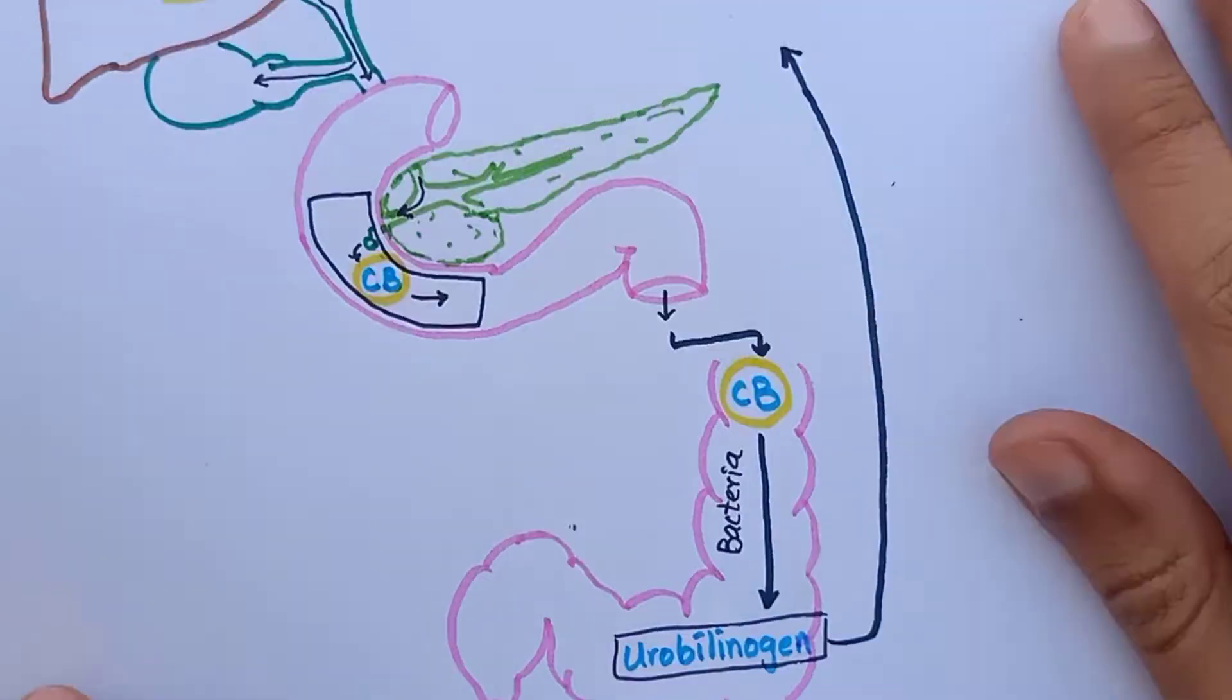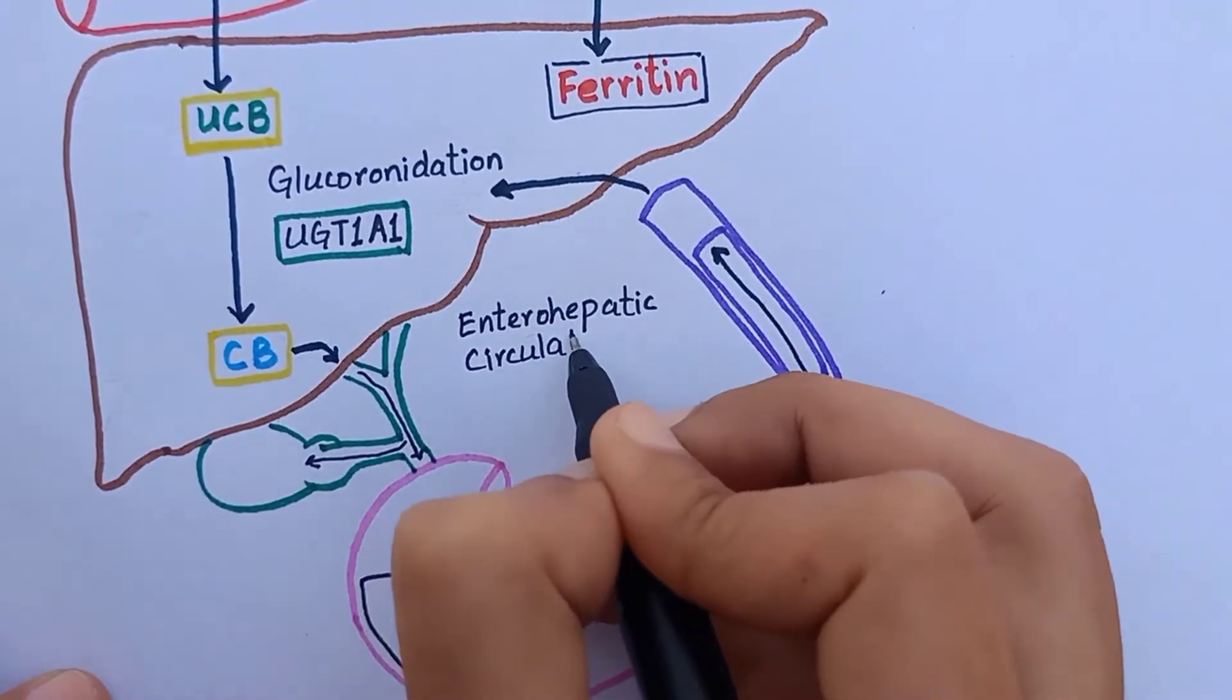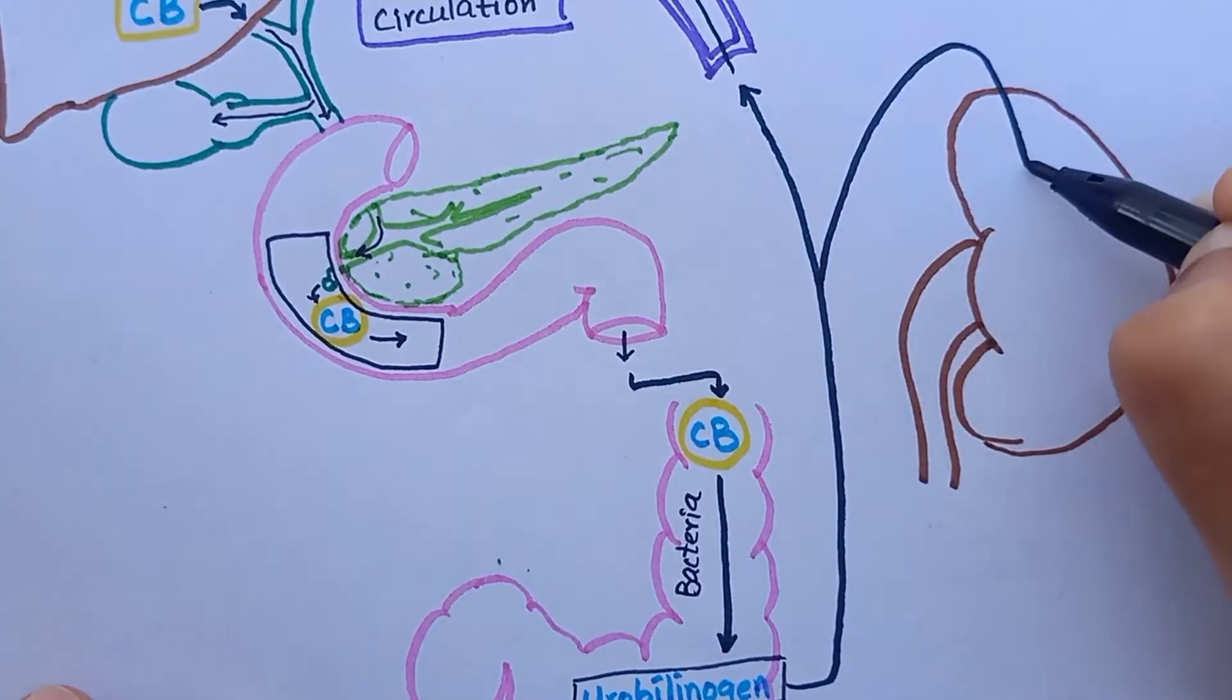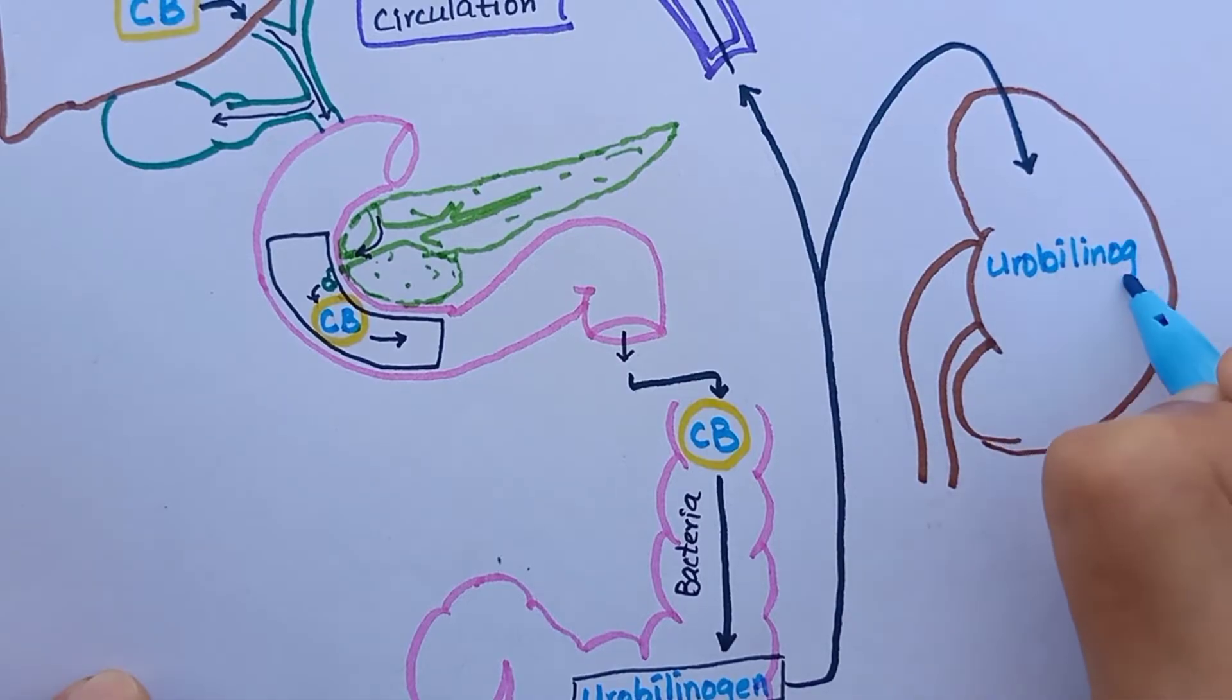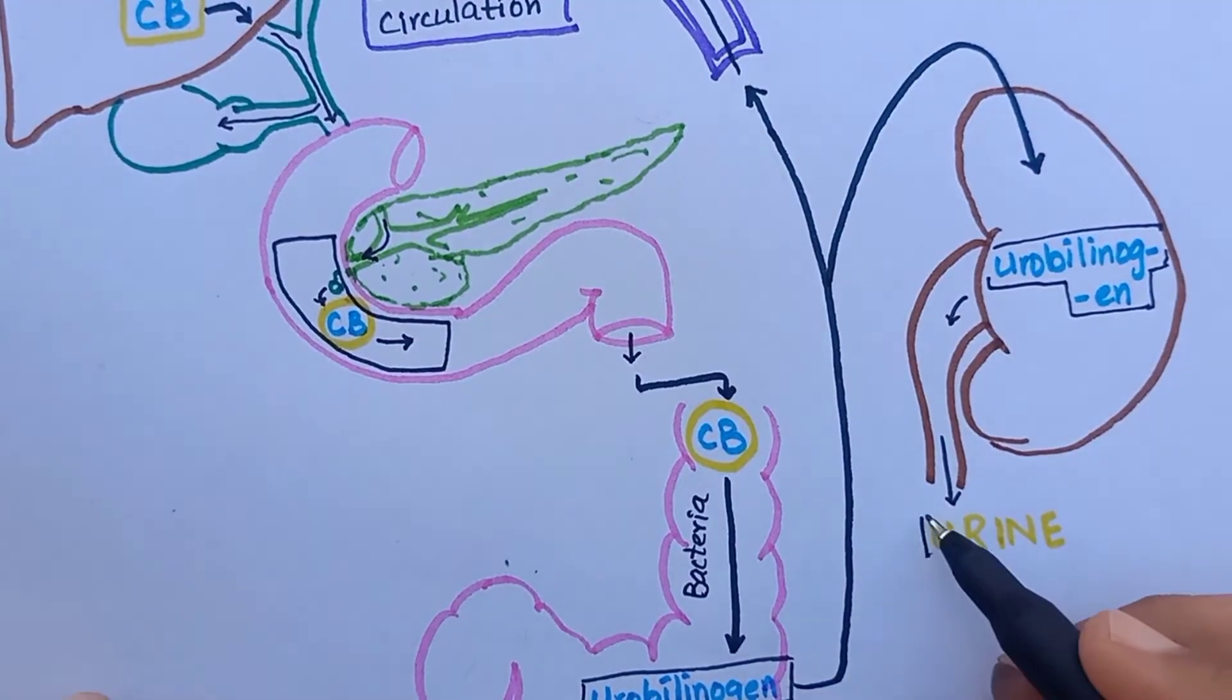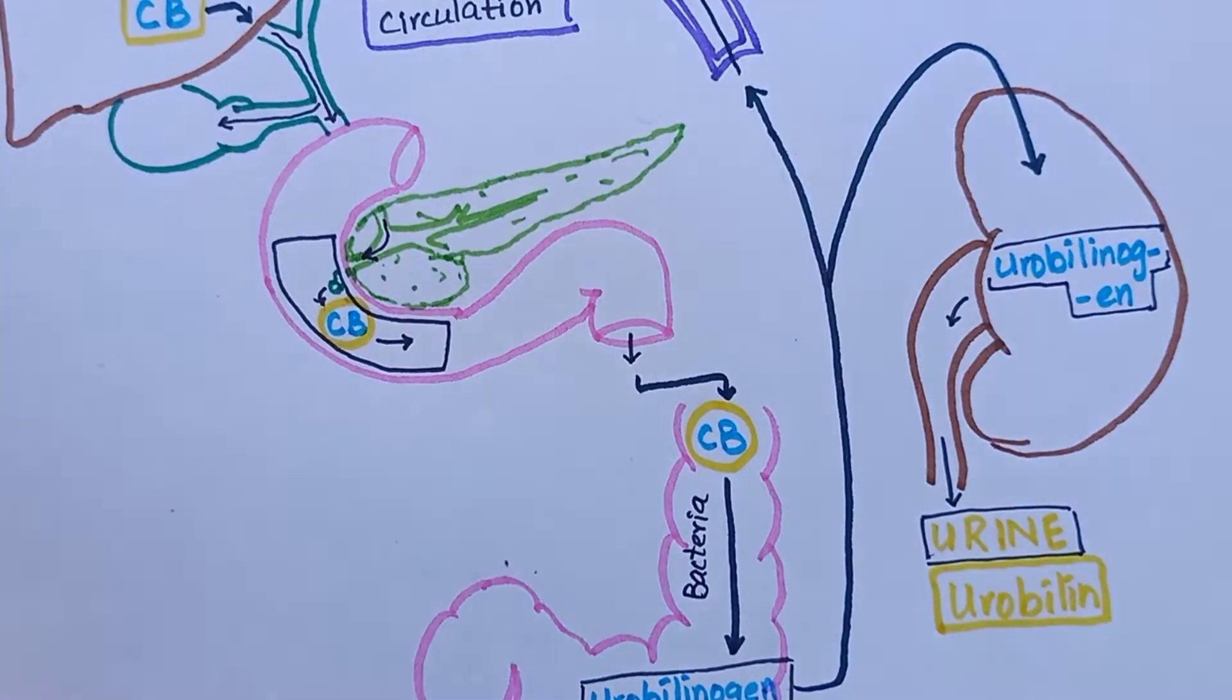Urobilinogen is partly reabsorbed and undergoes enterohepatic circulation and returns to liver to be processed again. The fraction of urobilinogen that is not cleared by liver will enter general circulation and is taken up by kidneys and excreted out of the body. When urine is exposed to air, the urobilinogen is oxidized to urobilin which is a yellow pigment giving urine its characteristic yellow color.